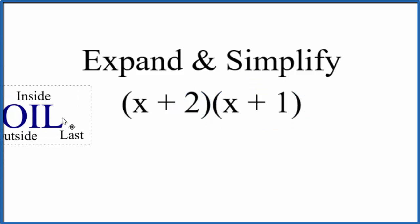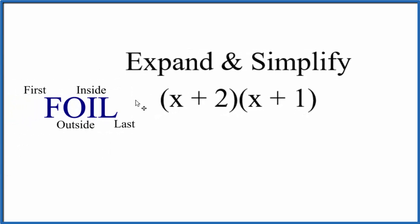It's helpful to think of this with the FOIL method here. It helps us keep everything straight so we don't miss anything. So we go to the first term. The first term, that's this here and this here. So x times x, that gives us x squared.